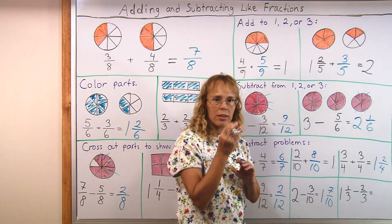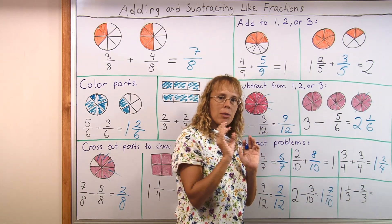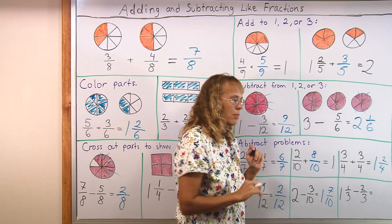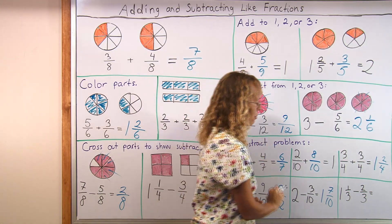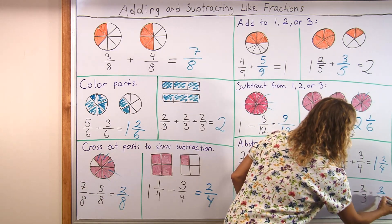And this one, 1 and 1 third. If you see the pie, 1 pie and then 1 third. And take away 2 thirds. You know, you take away the 1 third from the 1 pie and then 1 third from the other pie and what is left is 2 thirds.